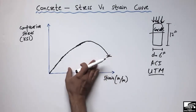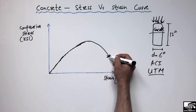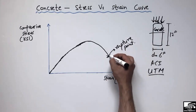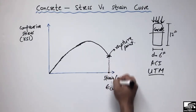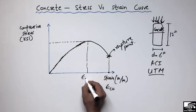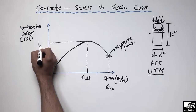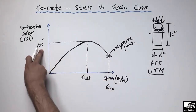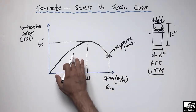Such a curve is always obtained from concrete, whether made from normal concrete or high-performance concrete. The point at which it cannot take any further load is called the rupture point, and its strain is represented as ECU — the ultimate strain for this concrete. The vertical axis gives the ultimate compressive strength for this concrete material, so on the Y-axis we have compressive strength and on the X-axis we have the ultimate strain.